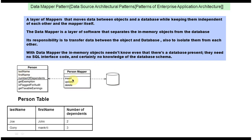With the Data Mapper, the in-memory objects don't need to know that a database is even present. They need no SQL interface code and certainly no knowledge of the database schema. There is no need to write any SQL-related methods in the in-memory object — database operations are taken care of by the Person Mapper. So this is about the Data Mapper pattern. Thanks for watching.